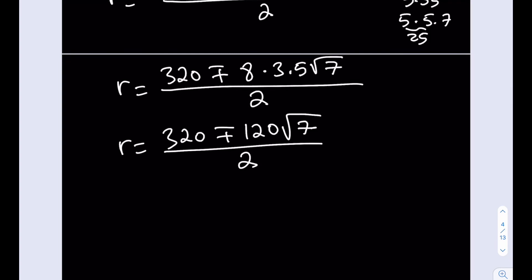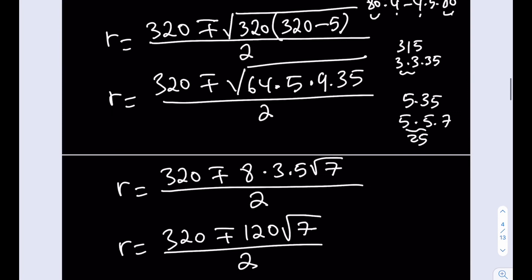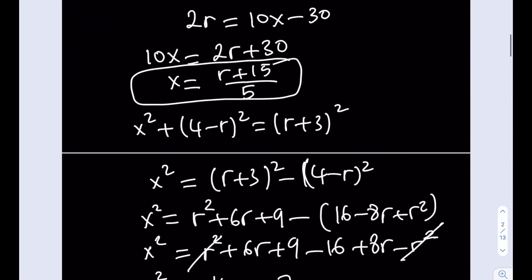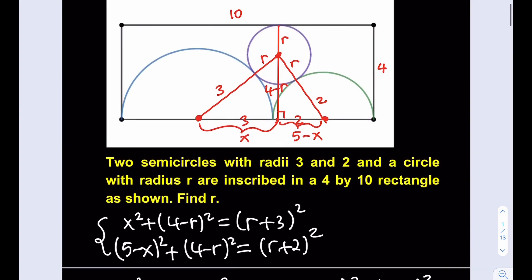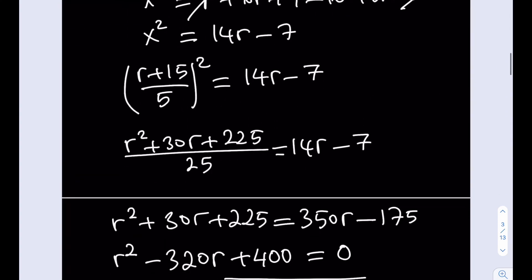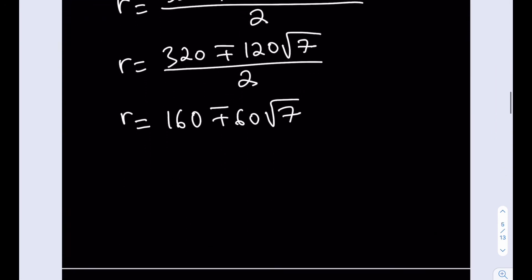What we're going to do next is going to be dividing everything by 2, and this should give us the answer. But we still have to decide which one is a good answer. Which one do you think is going to be the answer in this case? Well, if you think about the positive version, it's going to be a very large number, greater than 160. But we only have a really tiny rectangle here, which is 4 by 10. So r is going to be definitely less than 4. So we're going to be going with the minus sign here. The radius of this infamous circle is going to be 160 minus 60 times root 7. Isn't that awesome? So radical.